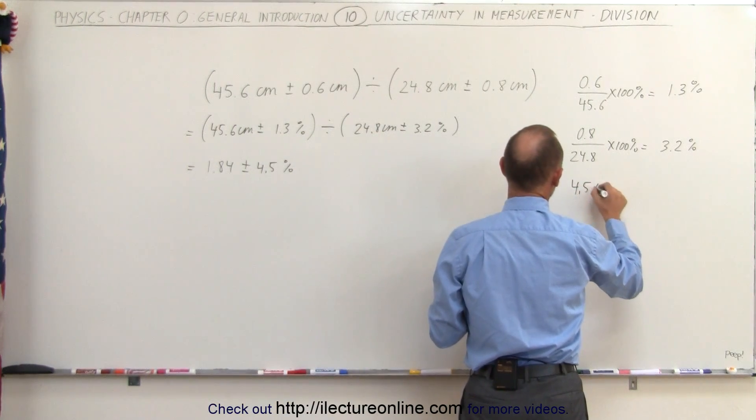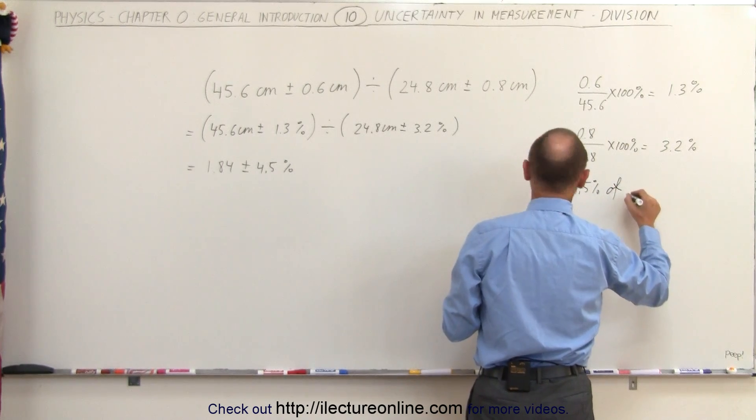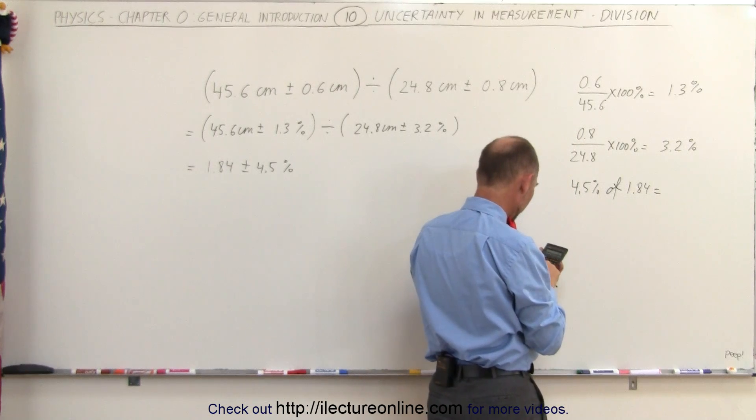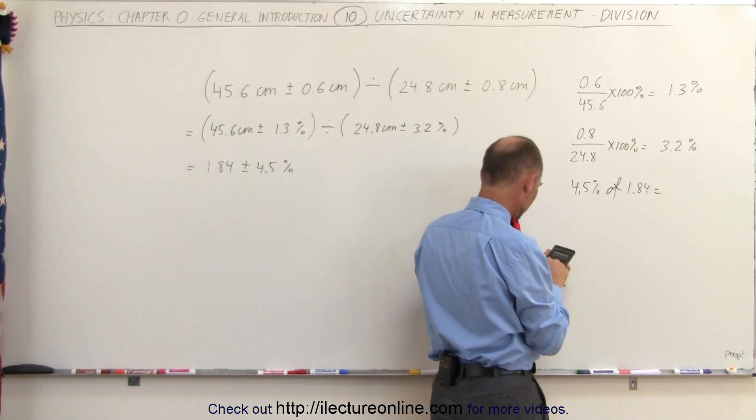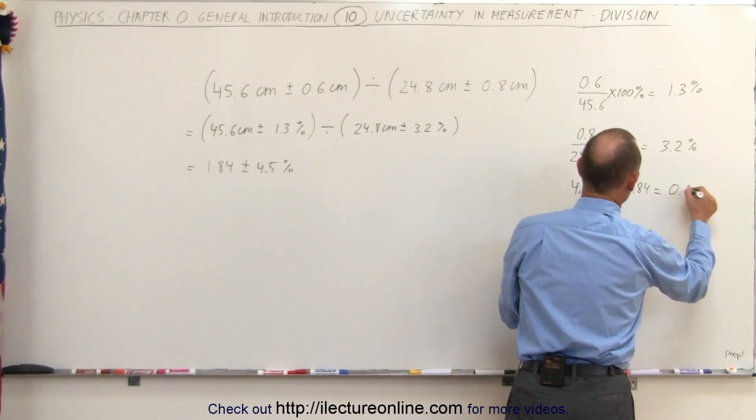So 4.5% of 1.84 equals 0.045 times 1.84 equals 0.08.